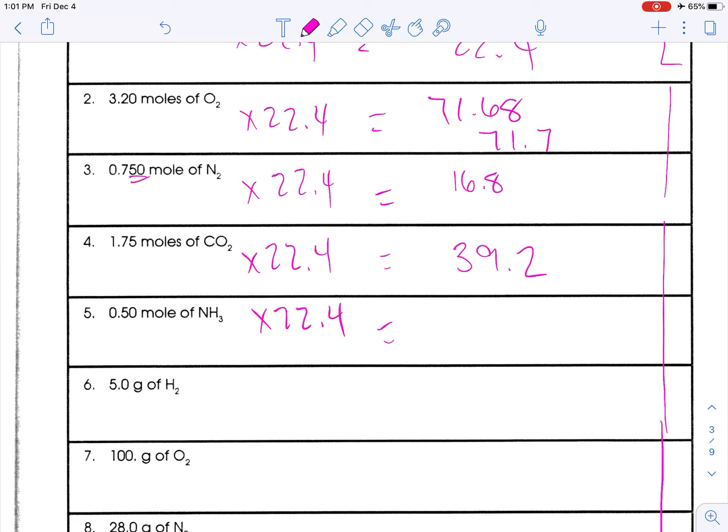.5 times 22.4 is 11.2. However, if we needed two sig figs, that would simply be 11 liters. At STP, technically. Alright, now.